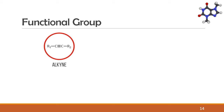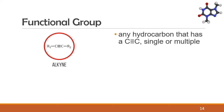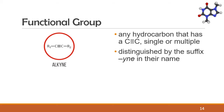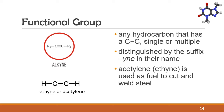Then, we have alkyne. An alkyne is any hydrocarbon that has a carbon triple bonded to another carbon. There could be just one or multiple of these bonds in a compound. Alkynes are distinguished by the suffix "-yne" in their name. Acetylene, formerly known as ethyne, is used as fuel to cut and weld steel.